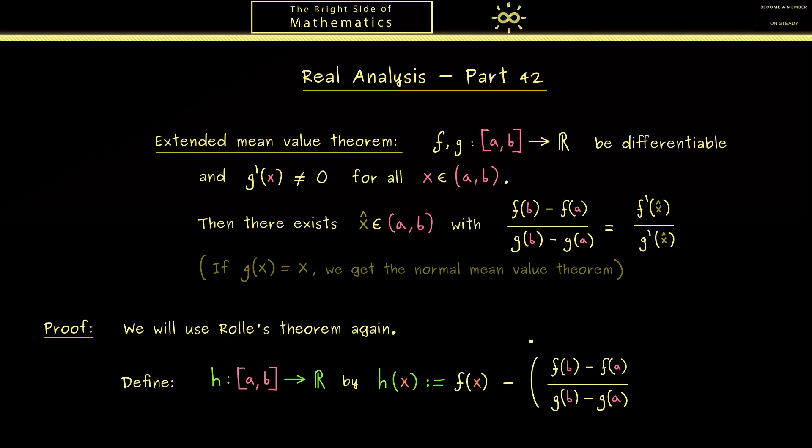As you already know, the generalized slope should be this quotient here. Also, the role of x is now given to g(x). Therefore we have to multiply with g(x) - g(a). Nevertheless, the y coordinate is still the same, so we add f(a). And with this we have the definition of h.